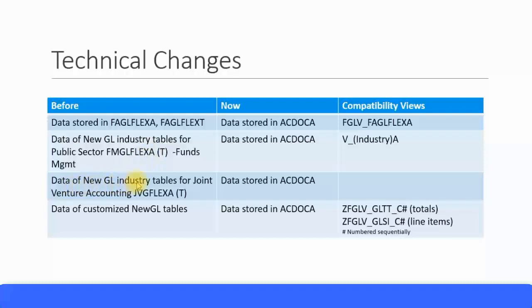For new GL industry tables related to Joint Venture Accounting, the old tables were JVG_FLEXA or JVG_FLEXT. Again, that data is now stored in the ACDOCA table.